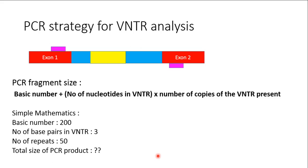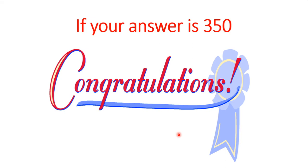Let's test ourselves: if the basic number is 200, the VNTR repeat unit is 3 nucleotides, and there are 50 copies, what is the PCR product size? If your answer is 350, congratulations — you understood the concept. If not, please go back and review the calculation to arrive at this figure of 350.